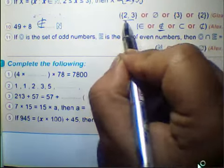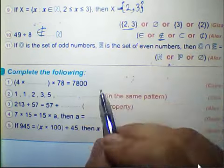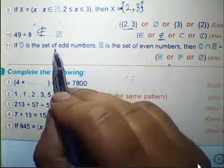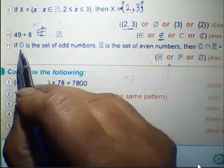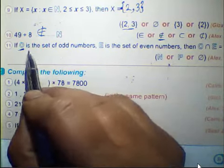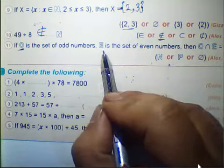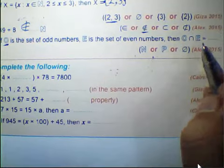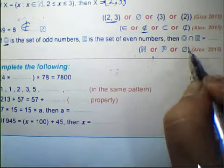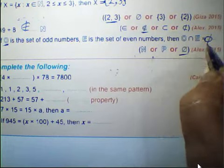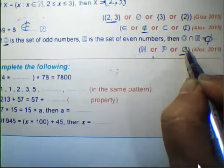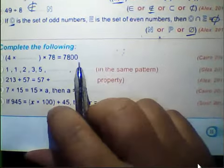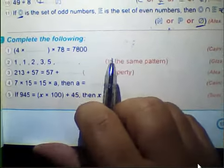We choose 2 and 3 in the last question. If O is the set of odd numbers and E is the set of even numbers, then O intersection E equals the null set. Even numbers intersection odd numbers equals the null set.